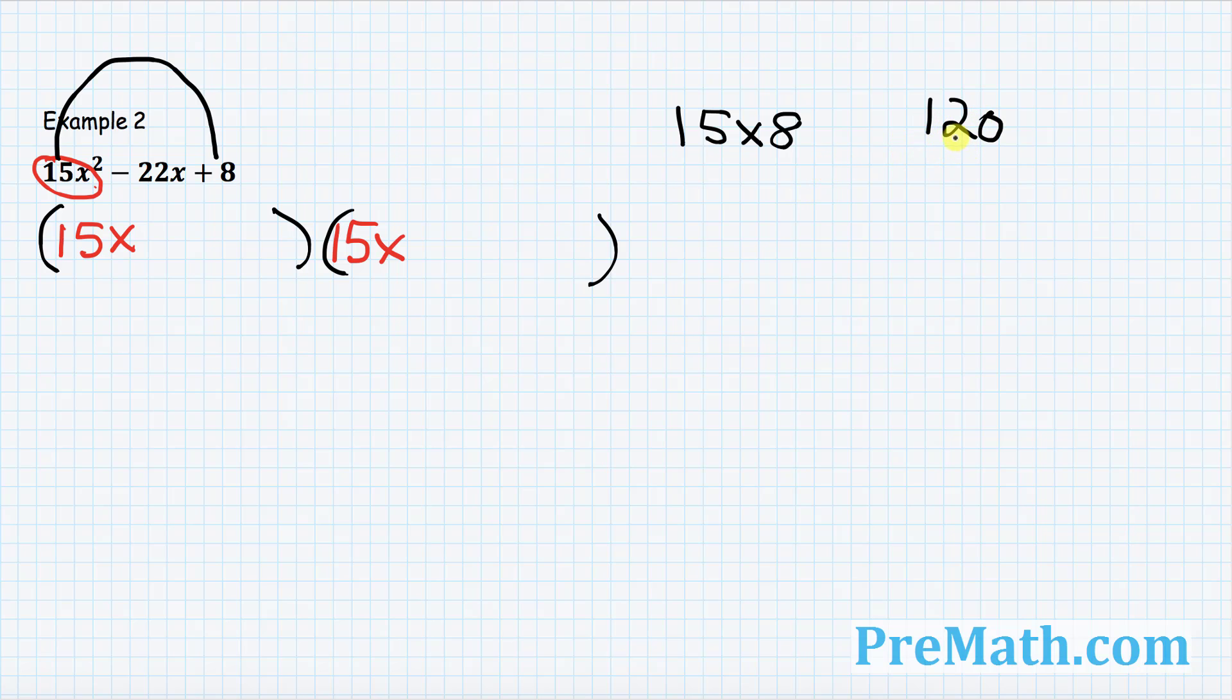So now we must find the possible factors in order to get this number, negative 22. So could you tell me what are the possible factors going to be for 120 that could give us 22 with a negative sign? Well, there are many different ways people can do. So let me show you a little bit simpler method to do this one. 15, I can write down 15 as 3 times 5 and 8 could be broken down to 2 times 4. So in other words, 120 could be written as 3 times 5 times 2 times 4.